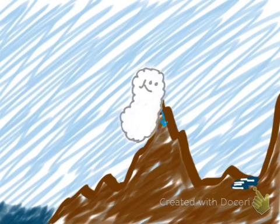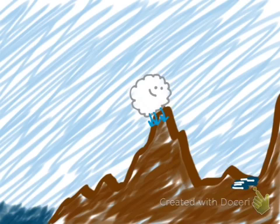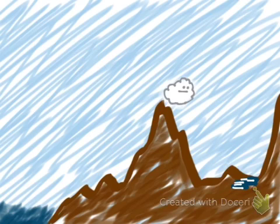So as the cloud goes higher and higher to get over the Sierra Nevadas, it loses more and more moisture, until it's pretty puny when it finally makes it over into the Great Basin.